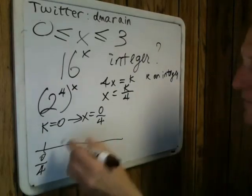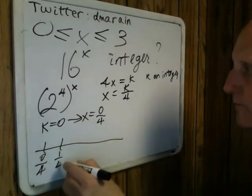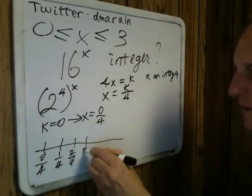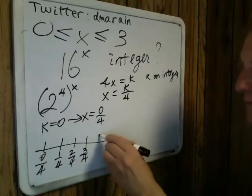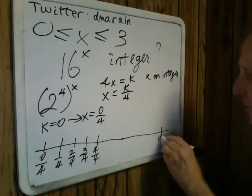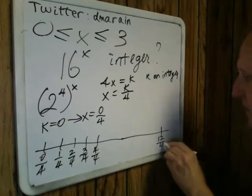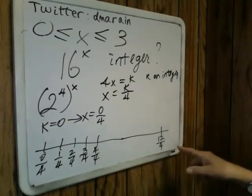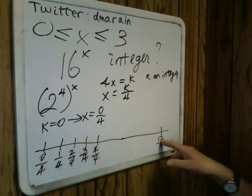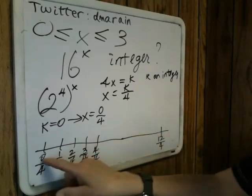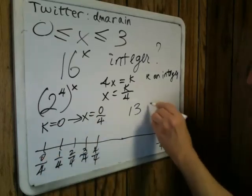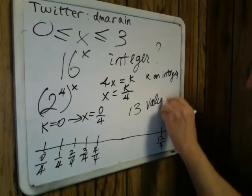So we start with k = 0, giving x = 0/4. Then k = 1 gives x = 1/4, k = 2 gives x = 2/4, k = 3 gives x = 3/4, k = 4 gives x = 4/4, and we can go all the way up to x = 3, which is 12/4. From k = 1 to k = 12, you have 12 possible values for x. Throw in 0, and from 0 to 12 we have 13 values for x.